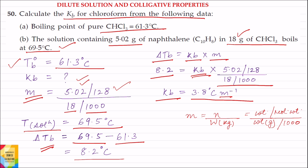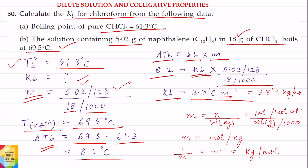Solving, the value of Kb is equal to 3.8 degree centigrade, where M stands for molality — M raised to the power minus 1. The unit of molality is moles of solute per kg of solvent, so 1 by M becomes M raised to the power minus 1, which is also equal to kg per mol. So value of Kb can also be written as 3.8 degree centigrade kg per mol.